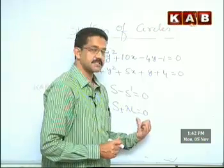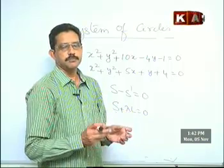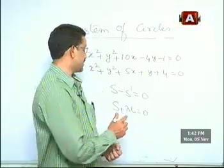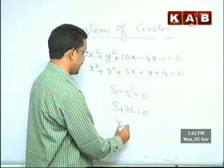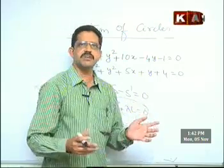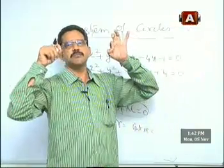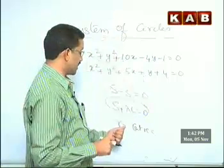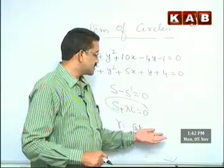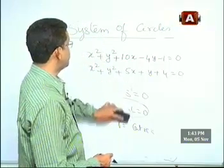The system S + λL = 0 represents many circles. We want to pick out circles which have no radius — zero radius. If you set the radius equal to zero, you get values of lambda. For those values of lambda, you get the limiting points. If you know this procedure carefully for one problem, you can do any problem.